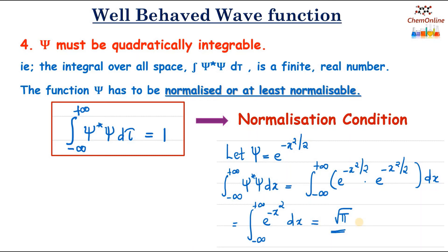There are four conditions that a wave function must meet in order to be treated as an acceptable wave function: it must be single-valued, it must be finite, and ψ and its first derivative must be continuous.